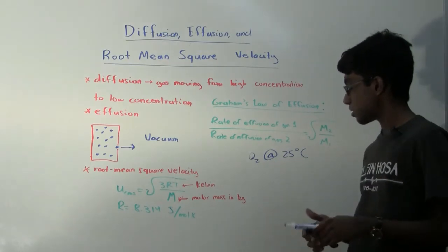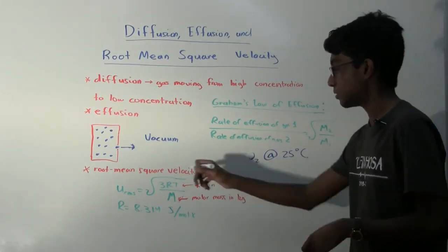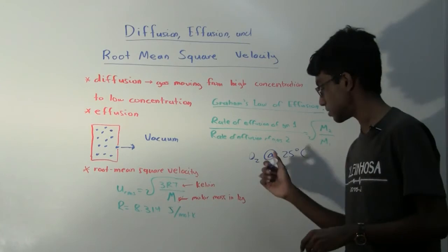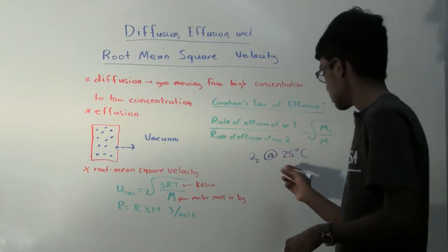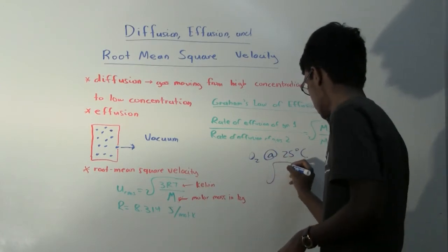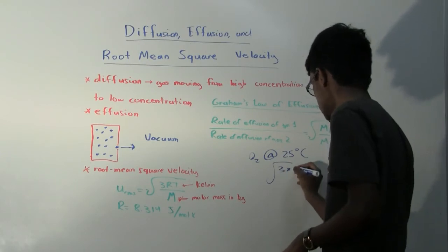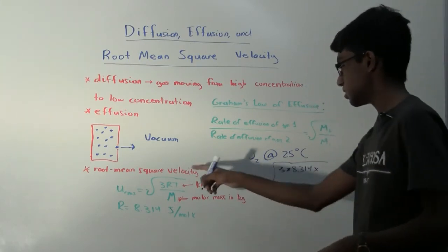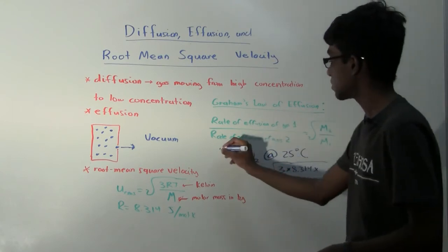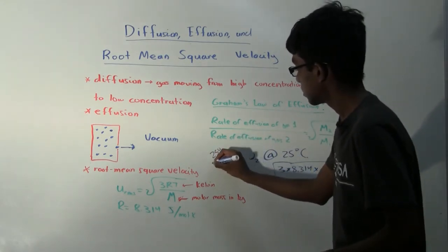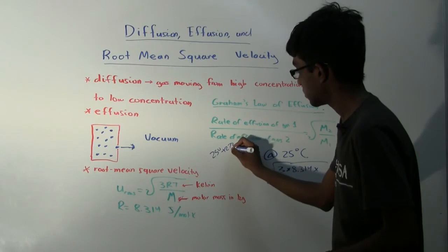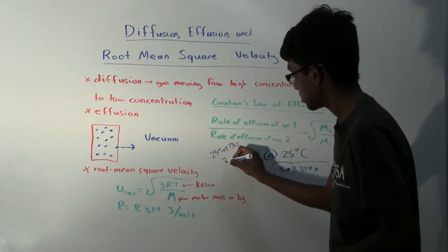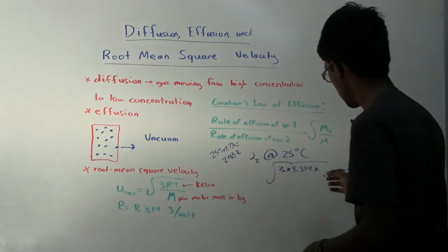So this oxygen at 25 degrees Celsius, what is the root mean squared velocity of this? So it's going to equal the square root of 3 times 8.314 times the temperature in Kelvin, 25 degrees Celsius. If you want to convert that to Kelvin temperature, we're going to have to add 273. So that is 298 Kelvin.